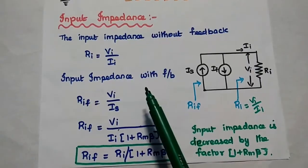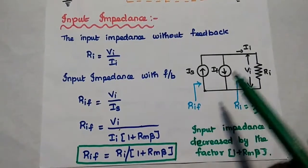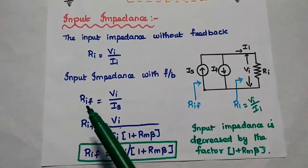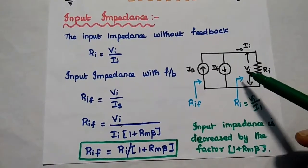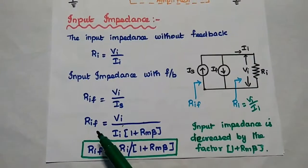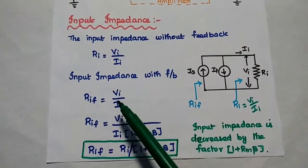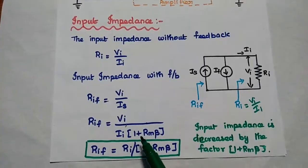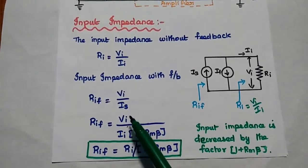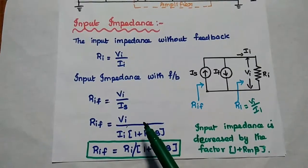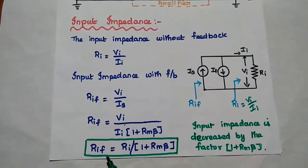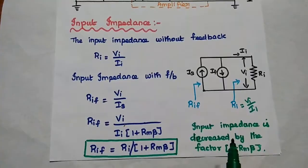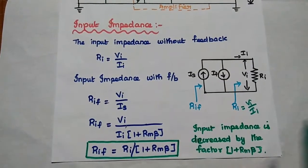We now consider the input impedance with feedback. Including the feedback signal, the input impedance with feedback RIF equals VI divided by the source current IS. Using the previously derived IS equals II·(1 plus Rm·beta), and since VI divided by II equals RI, we get RIF equals RI divided by (1 plus Rm·beta). The input impedance is decreased by the factor (1 plus Rm·beta).